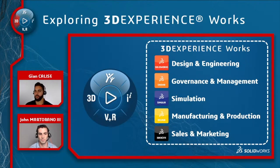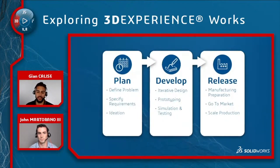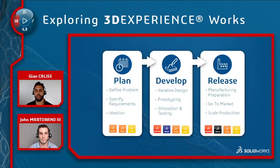That might be design and engineering, simulation, or all the way up to sales and marketing or manufacturing and production. The product development process in its simplest form is planning, developing, and releasing a product. All those different brands have different apps, tools, and features that trickle into this process in the different phases.